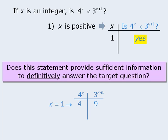Let's try another value for x. If x is positive, x could equal 4. We'll compare 4 to the power of x with 3 to the power of x plus 1 when x equals 4. If x equals 4, then 4 to the power of x equals 4 to the power of 4, which equals 256. And if x equals 4, then 3 to the power of x plus 1 equals 3 to the power of 5, which equals 243. So when x equals 4, the answer to our target question is no — 4 to the power of x is not less than 3 to the power of x plus 1.